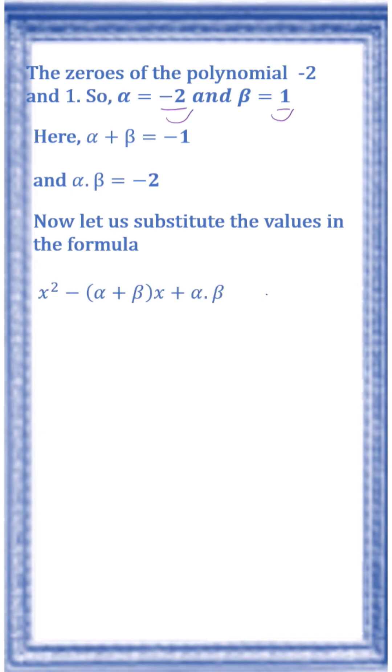x² minus (α plus β)x plus (α times β). In the place of α plus β, we have to write negative 1. In the place of α into β, we have to write negative 2. Now let us expand it.